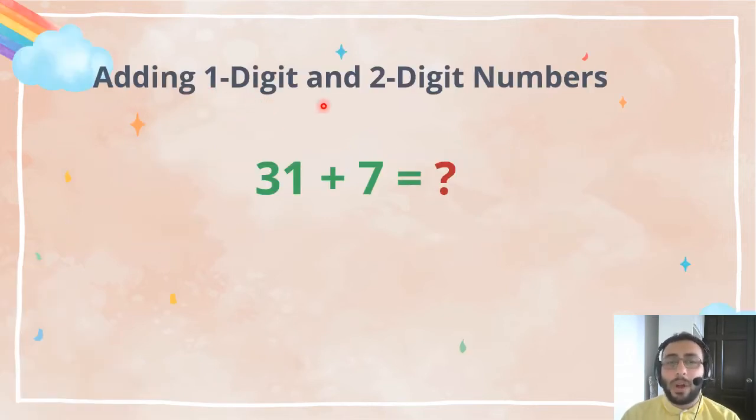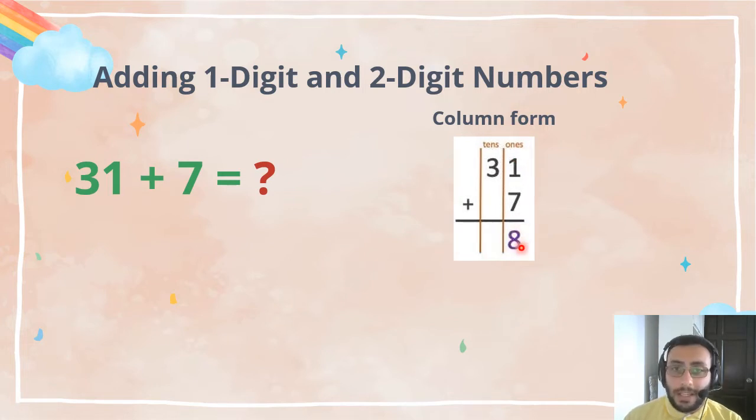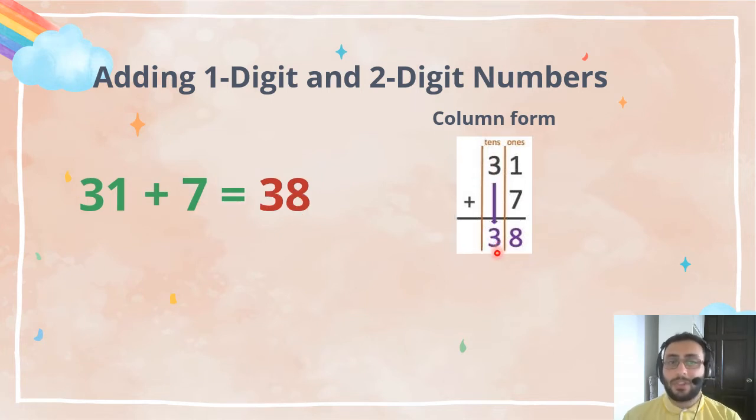Now, adding one-digit and two-digit numbers, we also learned about it. For example, thirty-one plus seven equals? You can do it in your head, but if you can't, it's okay. You can always write it in the column form, right? So we put the ones and tens. You start from adding the ones together. One plus seven is eight. Three plus, we don't have anything, so just bring the three down, so the answer is thirty-eight.